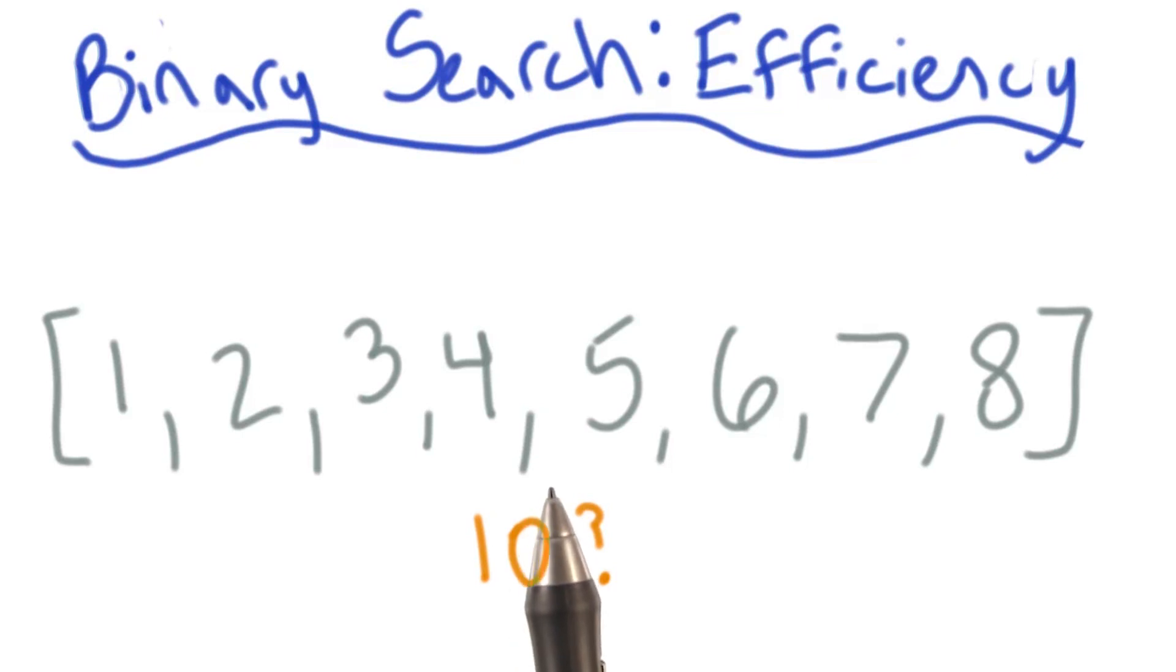So we'll want to start in the middle. This problem is a little bit weird because there's an even number of elements in this array, so we could either start with four or five really.